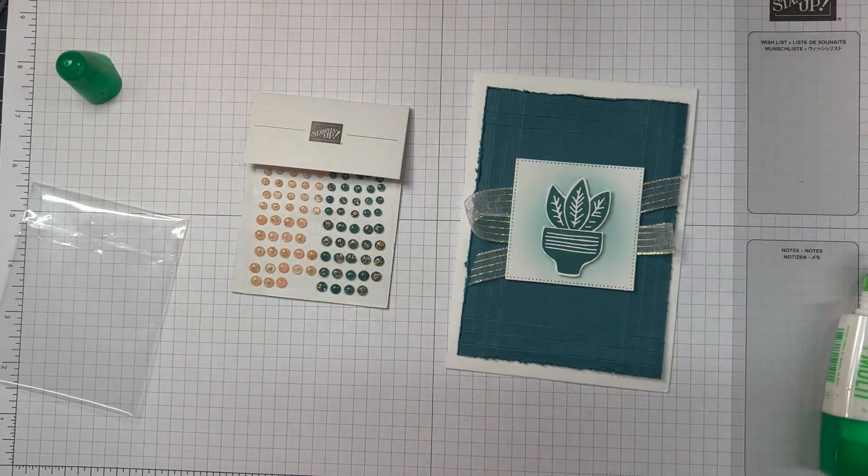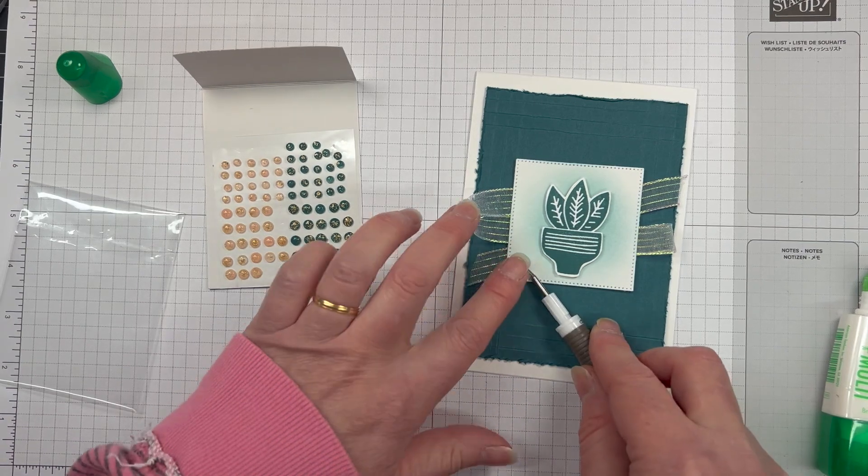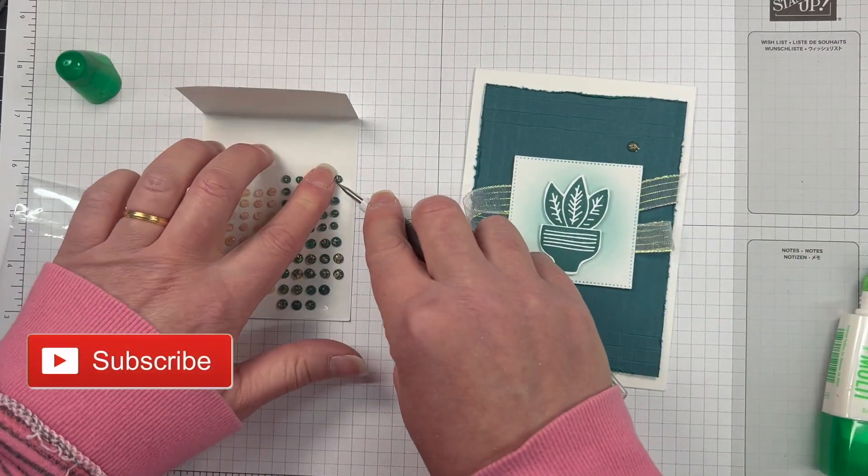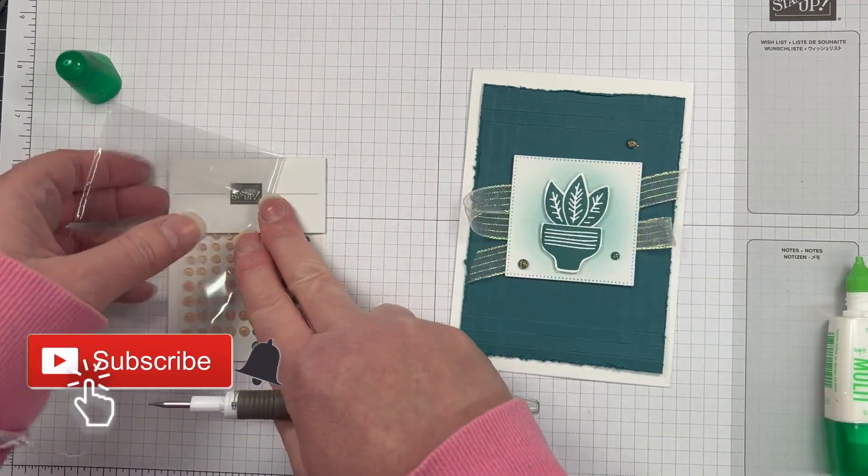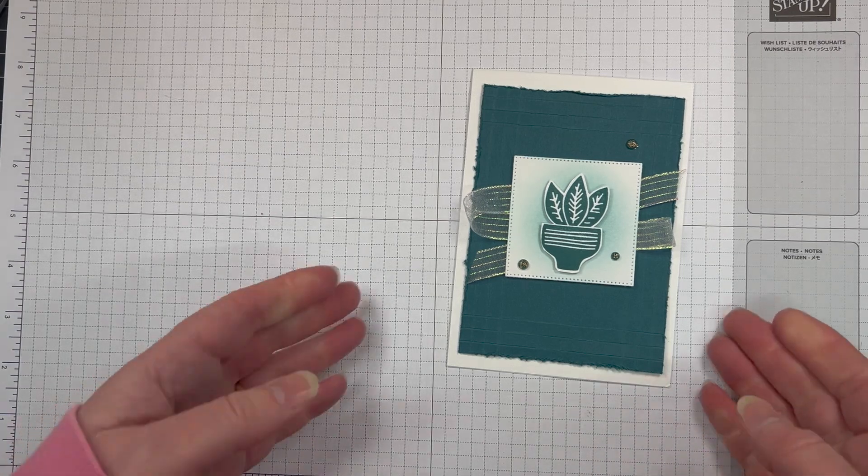So that's pretty much it—that is the card for the monochromatic Instagram hop featuring Pretty Peacock. I really hope that you've enjoyed today's card. Thank you so much for staying to the end of the video. Please make sure that you give me a thumbs up and share the video.